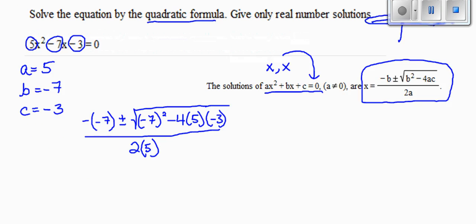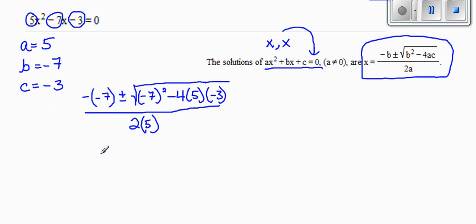So now I start simplifying this. Let's start with the numerator first. A negative and a negative give me a positive. Plus or minus the square root, negative 7 squared is 49, minus, that's going to be 20 times 3, is negative 60, all over 10.